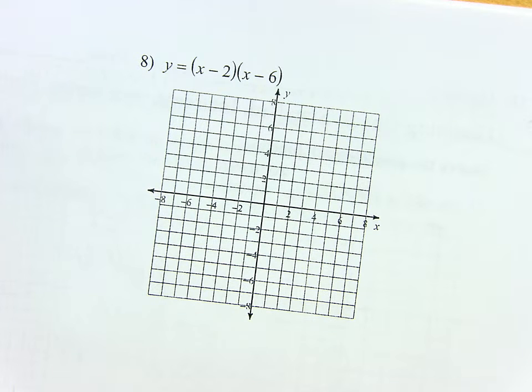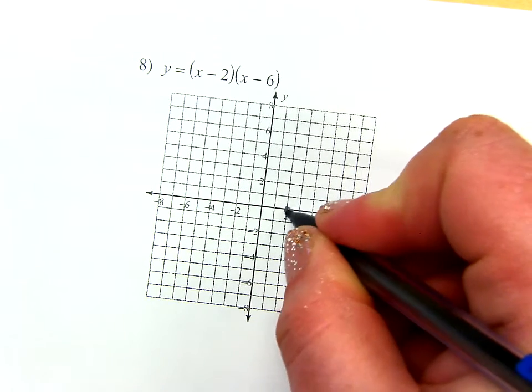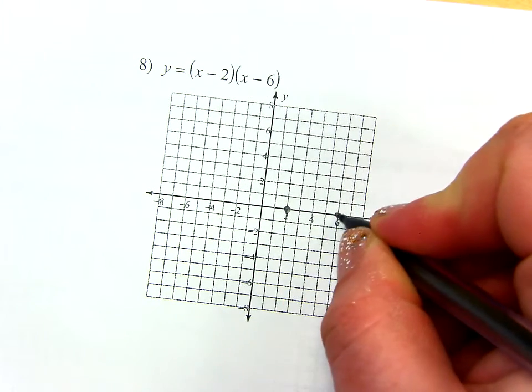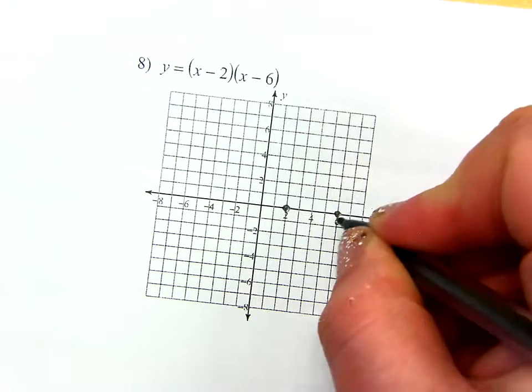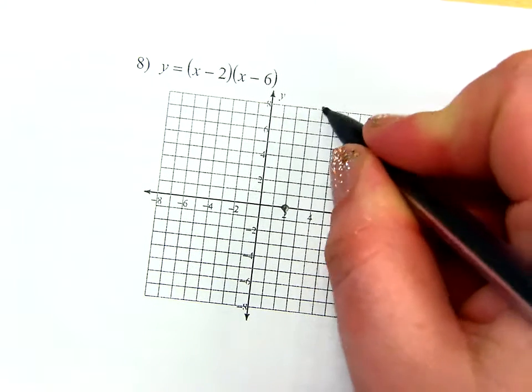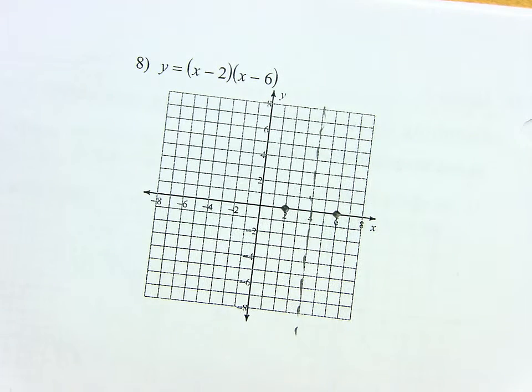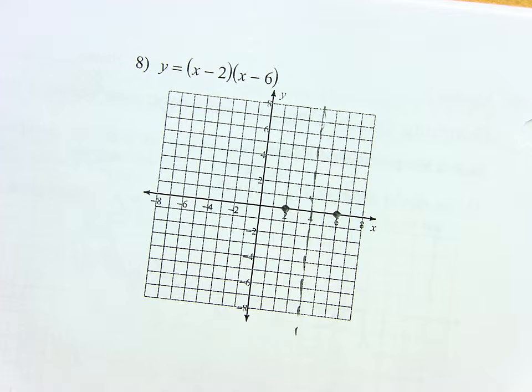So where is this thing at number eight crossing the X axis? At positive two and positive six. So please make sure you put dots at positive two and positive six. So I know it's crossing the X axis there, which means that my vertex has to be halfway in between those two points, which is four. So I know my vertex will be at four comma something. Do you all know where I got four from? It's just halfway in between those two points.